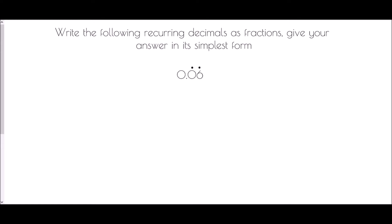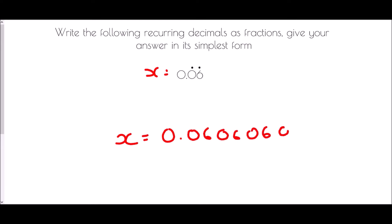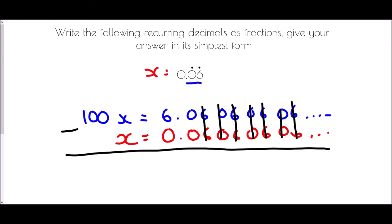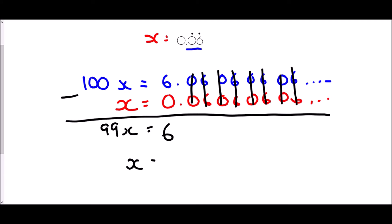For 0.06 recurring, it is the 06 which is repeating, so x equals 0.0606060606 and so on. With two digits repeating we multiply by 100, moving all digits two places left to get 6.0606060606. Subtracting, all decimal places cancel, leaving 99x equals 6. Dividing gives x equals 6 over 99. Both divide by 3, so the simplified answer is 2 over 33.